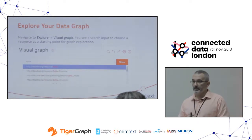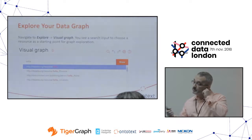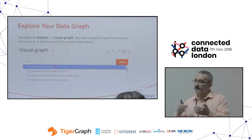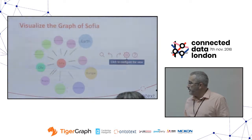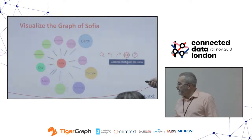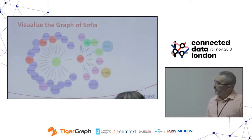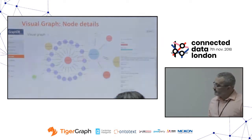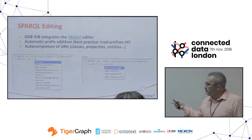We have AutoSuggest that uses cognitive analytics to figure out which is the best — at least the most important — one, the one most likely that you're searching for. You can visualize one node at a time and expand, and do some SPARQL queries.